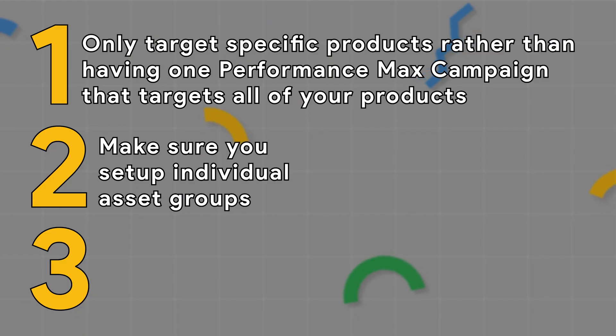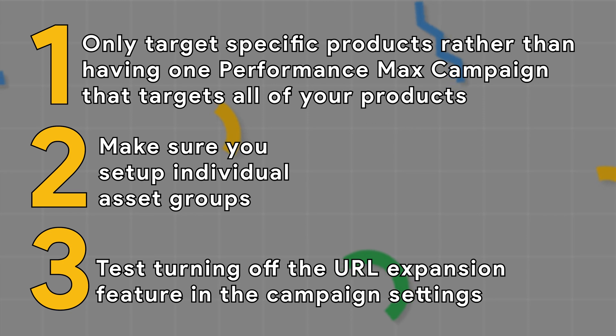Finally, you may want to test turning off URL expansion in the settings section of your Performance Max campaign. This stops Google from crawling all of your website and testing different landing pages that won't be successful. While I'm yet to fully confirm this, it should also help limit unrelated keywords since Google won't be pulling headings and titles from pages across your entire website.